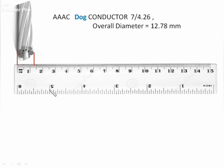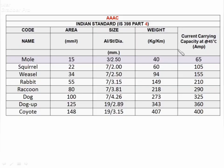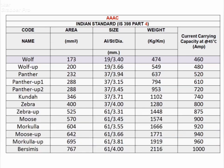If a precise instrument is not available, you can measure the diameter in the same way as described. This is the AAAC conductor chart — you can pause and see each row.